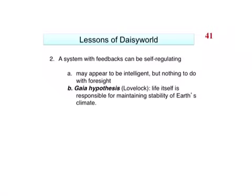But a system with feedbacks can be self-regulating. And over a certain range of luminosities, daisy world is self-regulating. It maintains a relatively constant temperature. It might appear that the planet is intelligent or somehow governed, but it has nothing to do with foresight. This regulation simply arises as a consequence of the rules governing the couplings between the state variables. And this forms the basis of the Gaia hypothesis by James Lovelock, which is basically that life itself is responsible for maintaining the stability of Earth's climate, and possibly now the growing instability of Earth's climate. So that's something to keep thinking about through the rest of the semester.